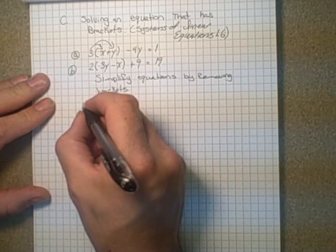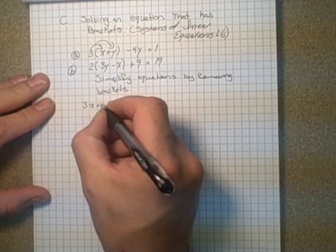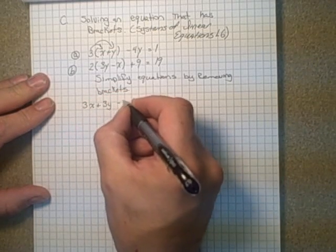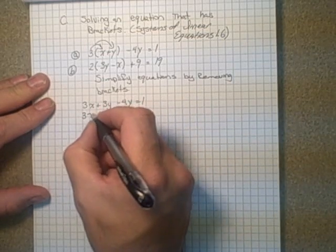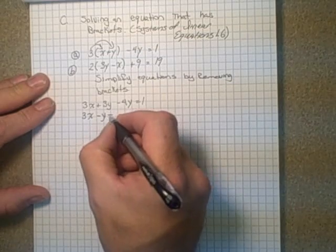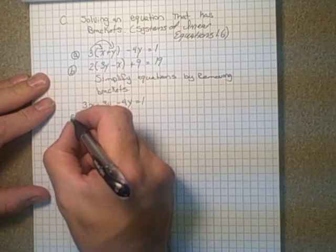3x plus 3y minus 4y is equal to 1. Simplify the y's in there. 3x minus y is equal to 1 is equation a.